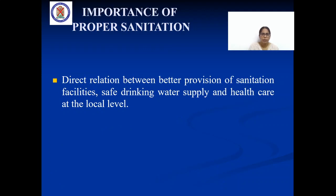During the planning of sanitation measures for any community, safe disposal of excreta is of great importance for the health and welfare of the population. Sanitation is the highest priority for local government to ensure basic health for communities. There is a direct relation between better provision of sanitation facilities, safe drinking water supply, and healthcare at the local level. Improved sanitation and safe drinking water supply should be the highest priority areas to achieve improved health in urban and rural areas. Sanitation must be given the status of a basic human need, like food, housing, and health.